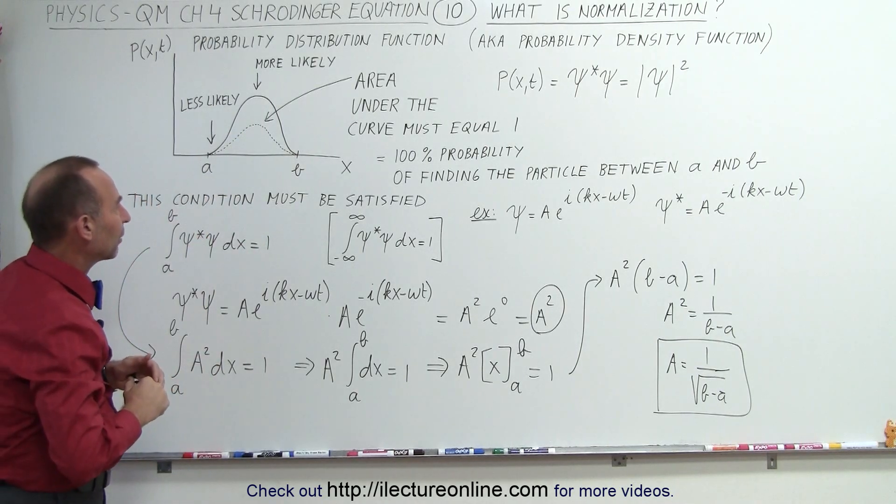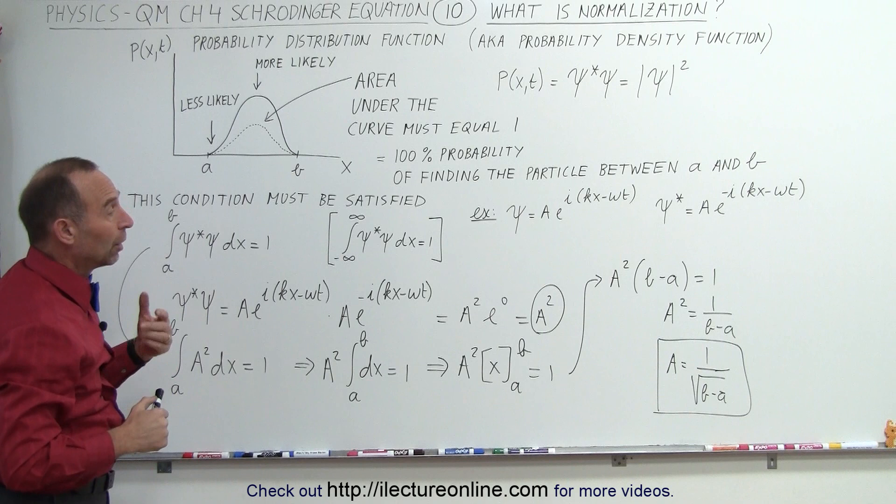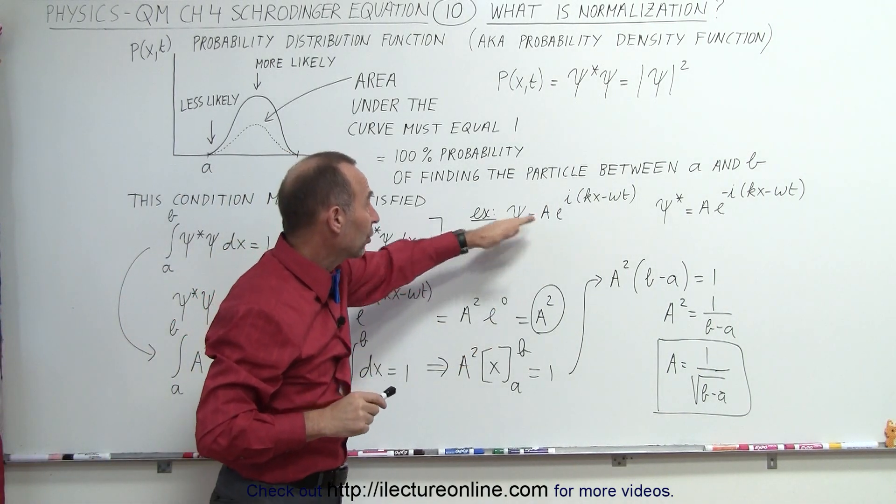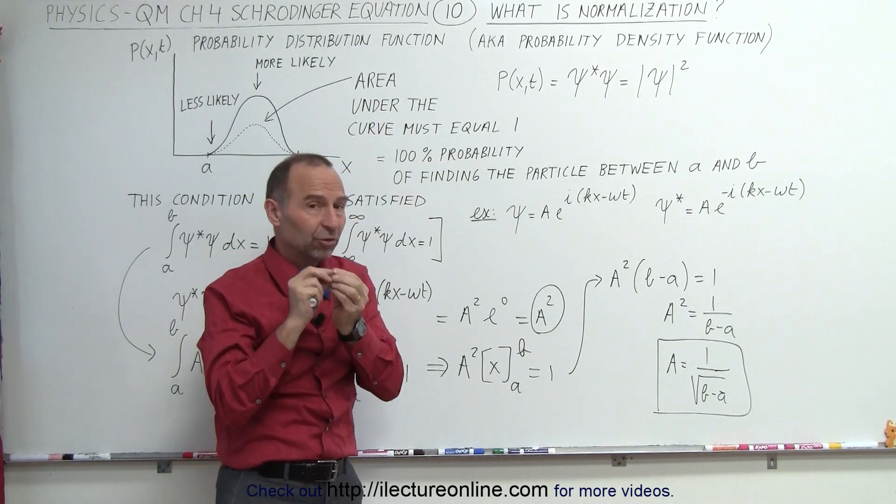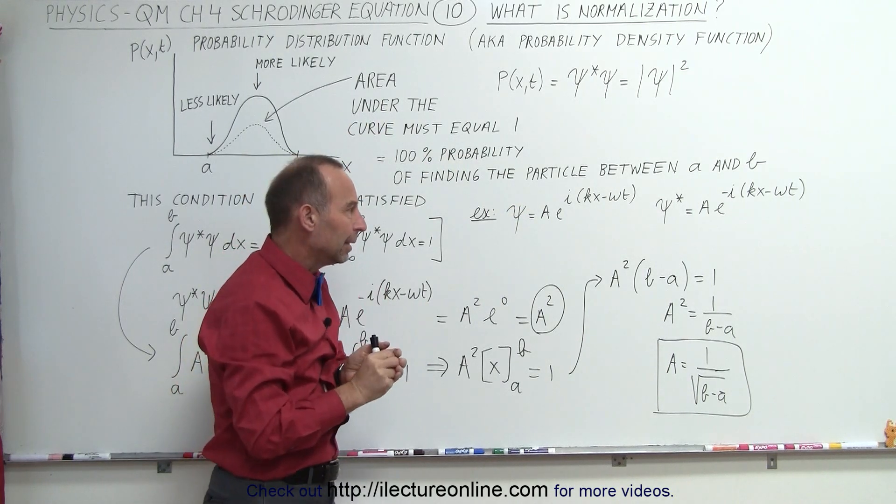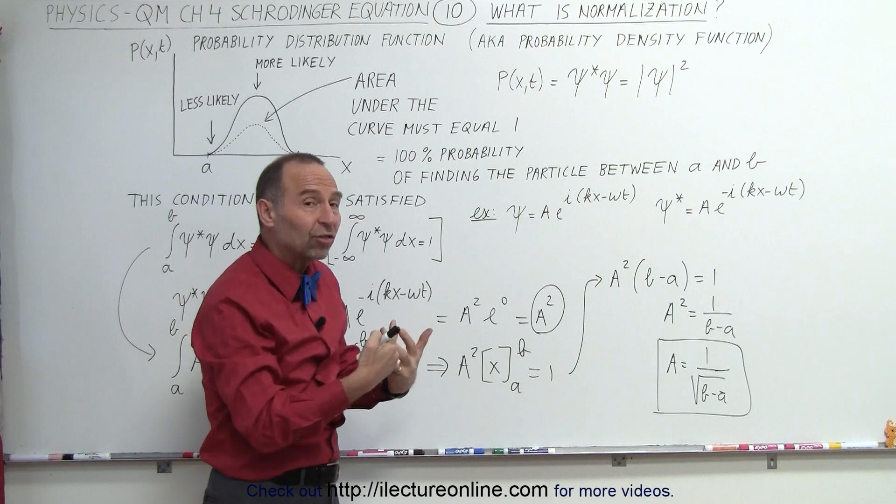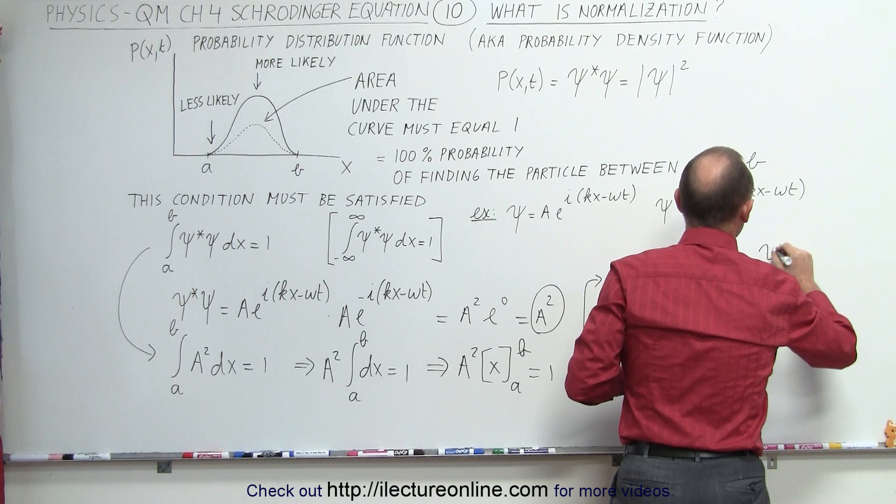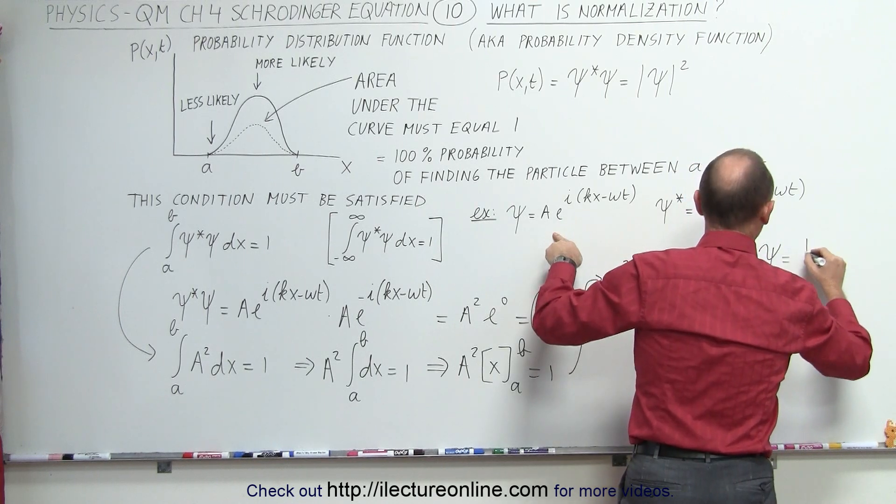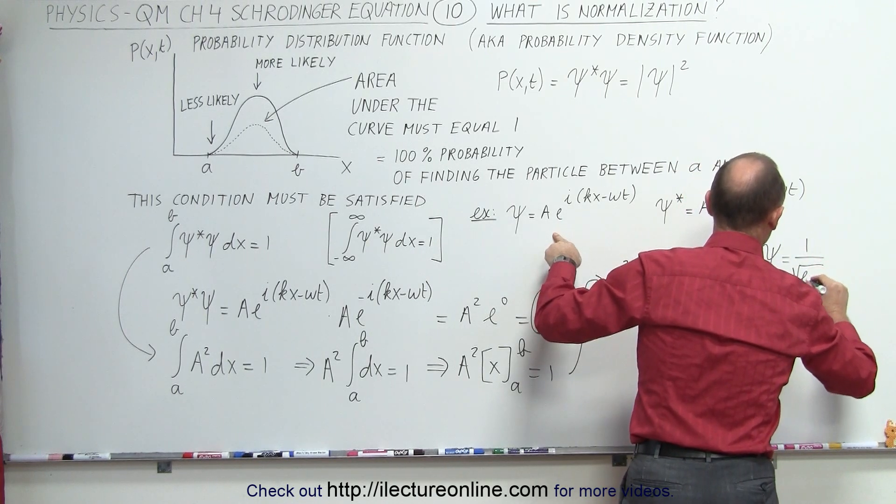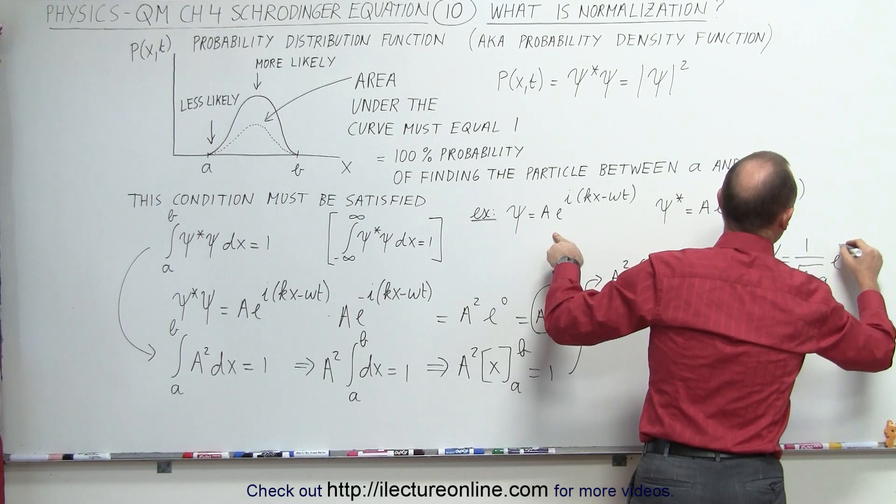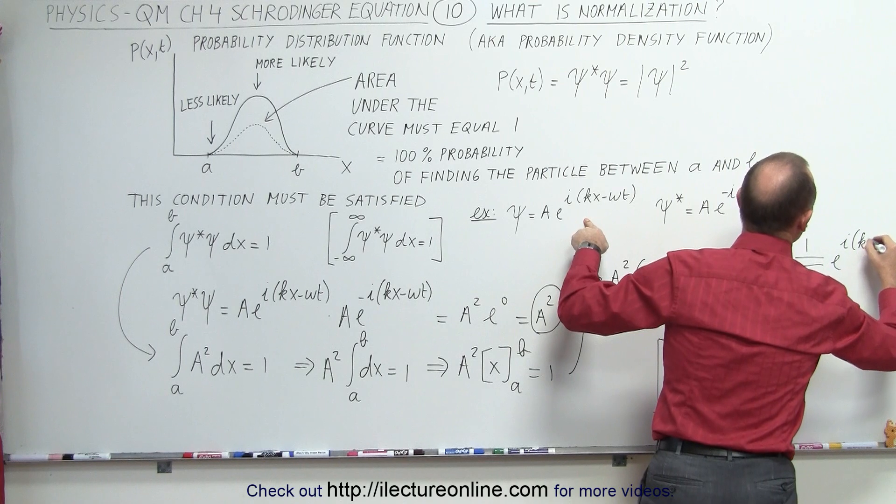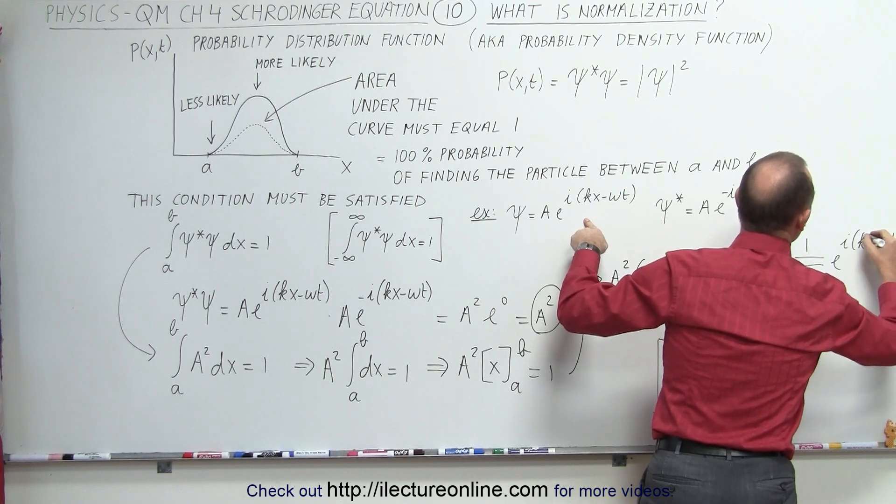And we'll expand on that just a little bit more in a later video. What this now means is that the proper wave function for this particular situation, a single particle with mass m that has no forces acting on it and that has a constant potential energy, that wave function will now become one over the square root of b minus a times e to the i times kx minus omega t.